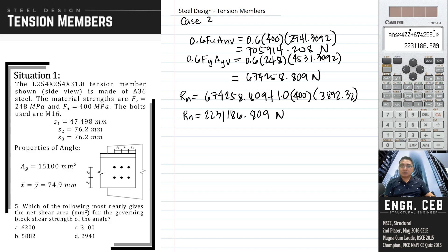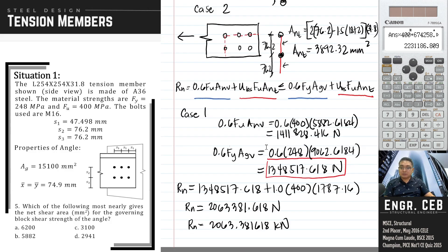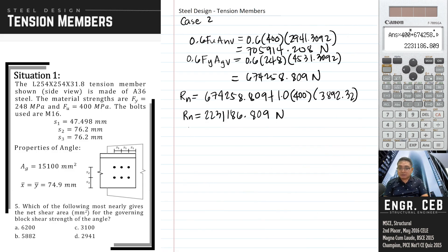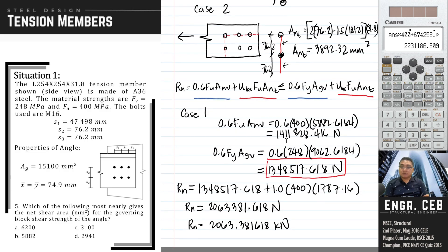Let us compare the nominal strength of case 1 and case 2. Of course, the nominal strength that will govern is the lesser value. For case 2, that is 2231186.809 Newton. That is greater than the nominal strength of case 1. Therefore, this is the governing block shear strength.